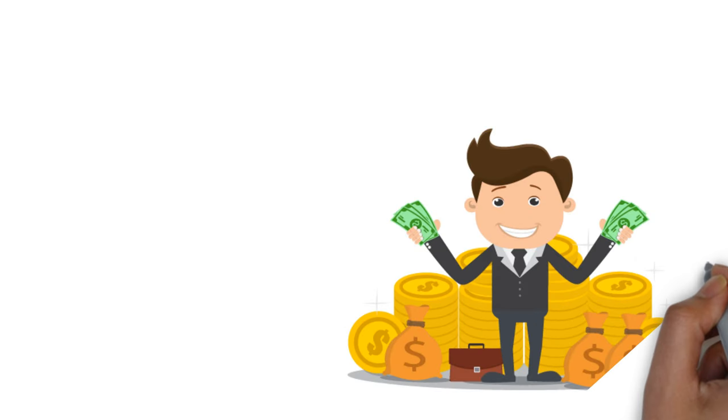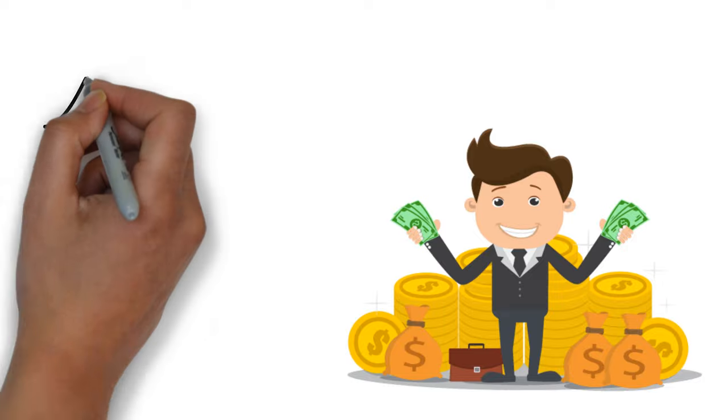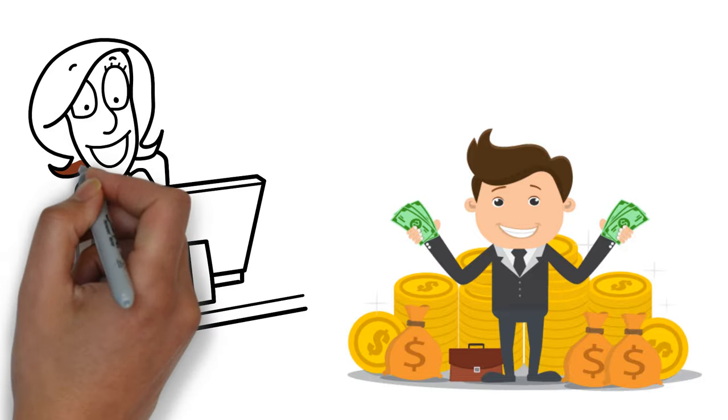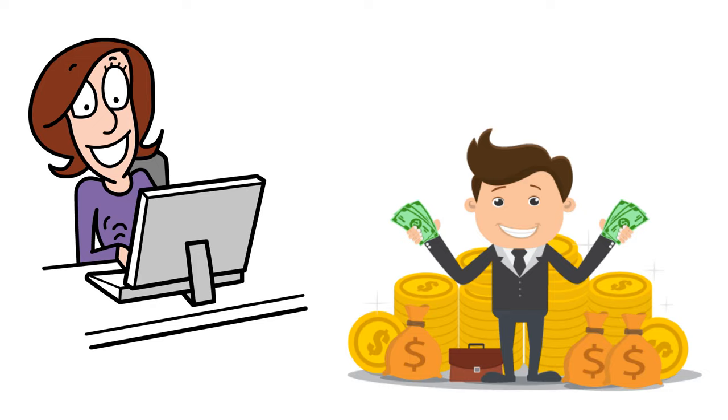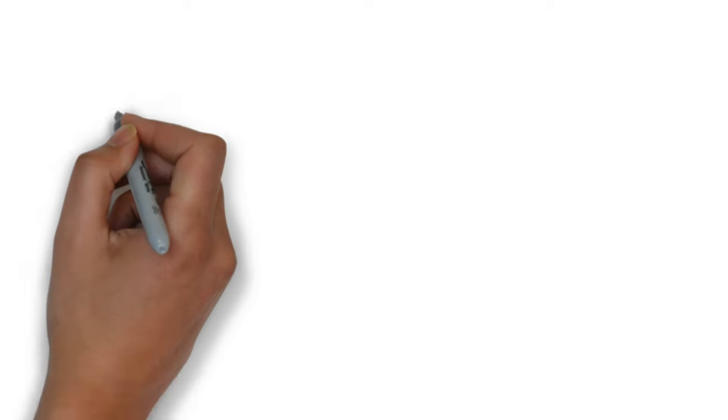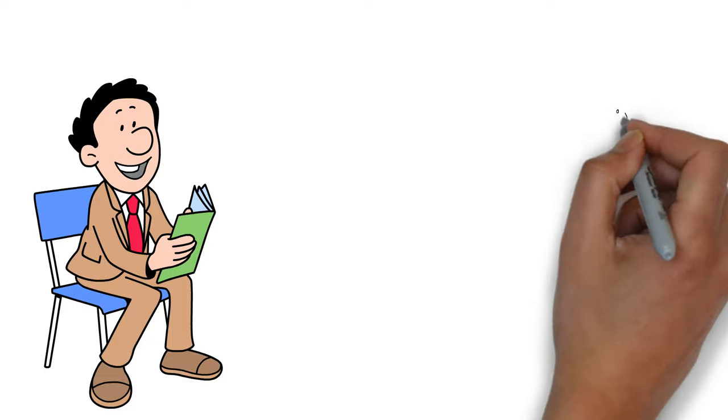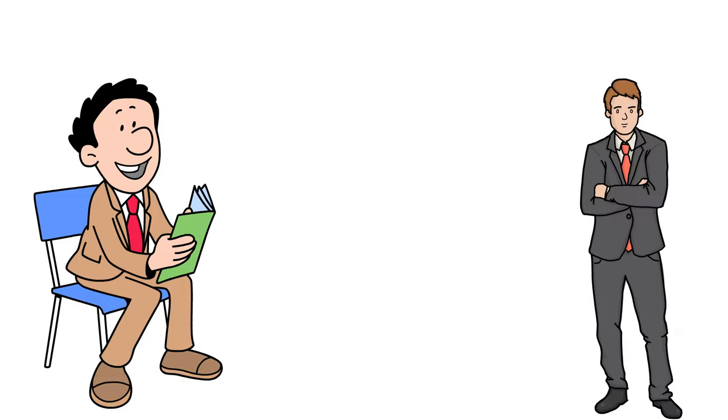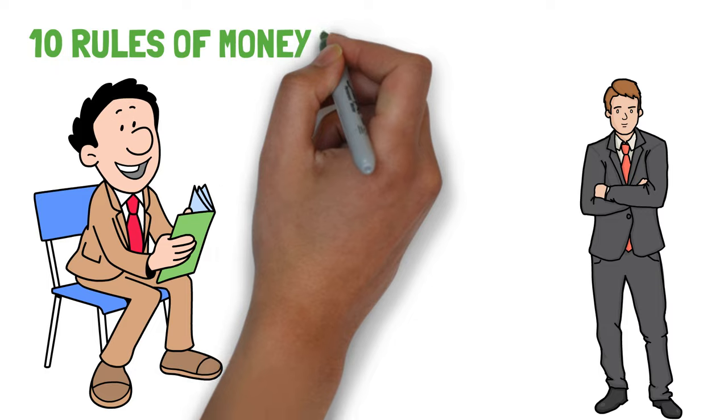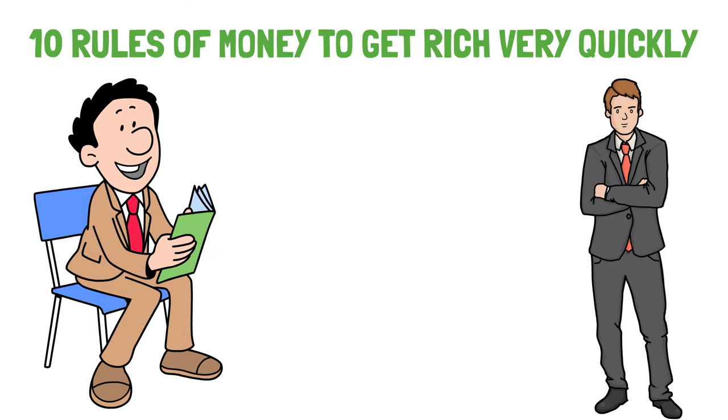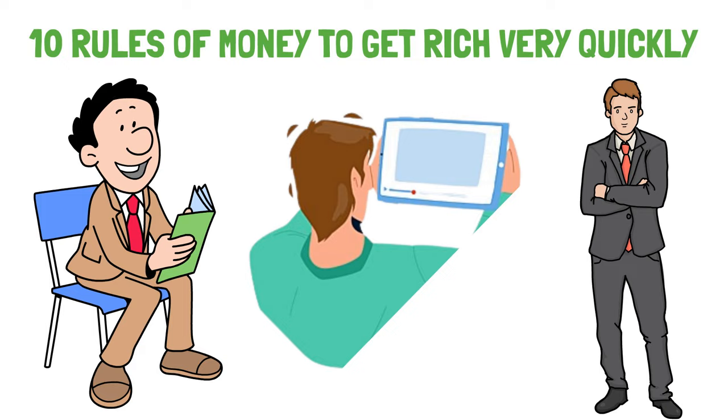Rules and discipline are the main forces that draw you to success. If you follow proper rules of money, you will see your name in the top billionaires list very soon. All the millionaires abide by the rules of money very cautiously. In this video, we will tell you the 10 rules of money that will make you rich quickly. Watch the video till the end as all the rules are important for you to follow.